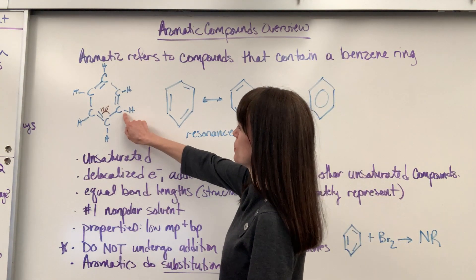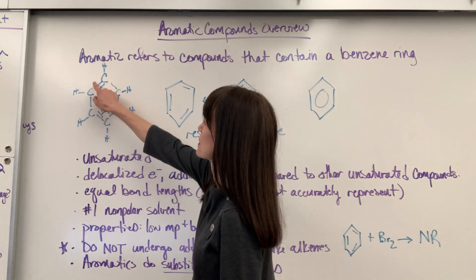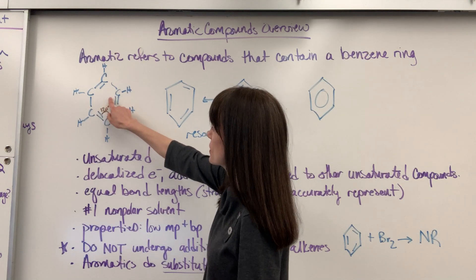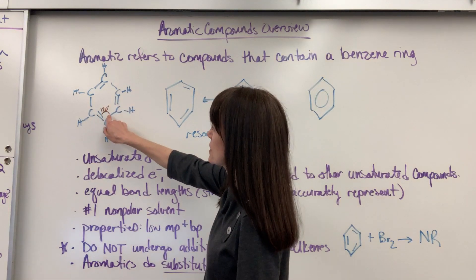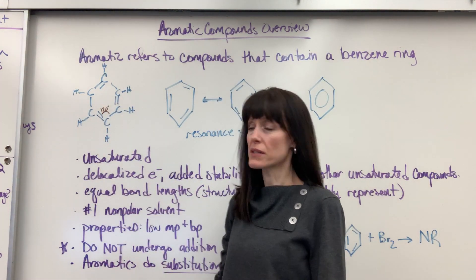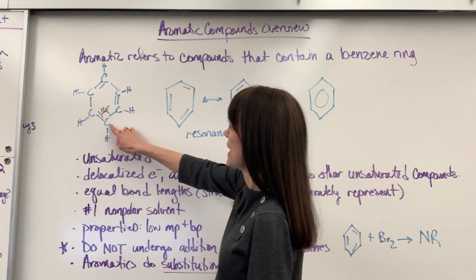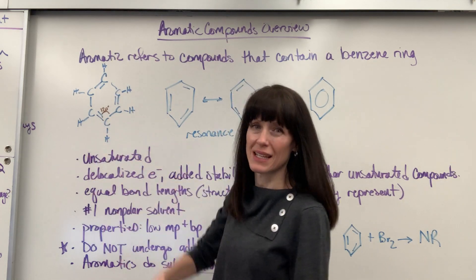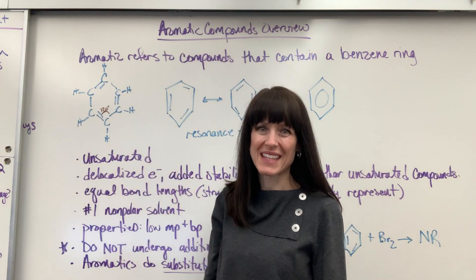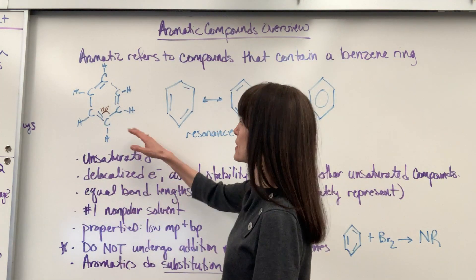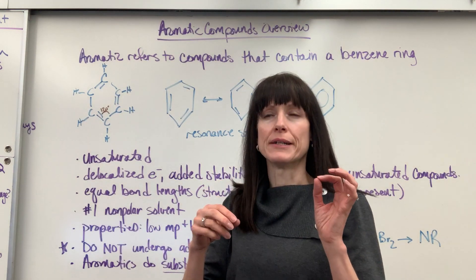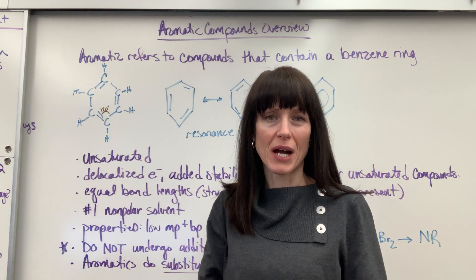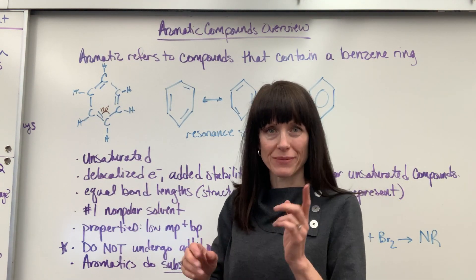You have your six carbons and then a double bond alternating. Notice this is going to be 120 degrees because any one of these carbons has one, two, three electron domains.